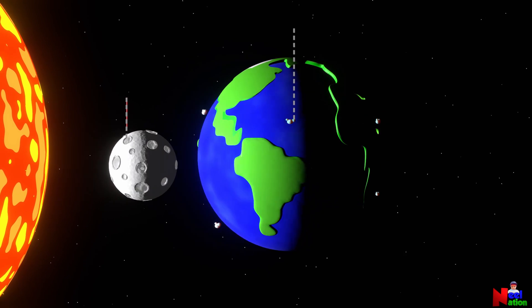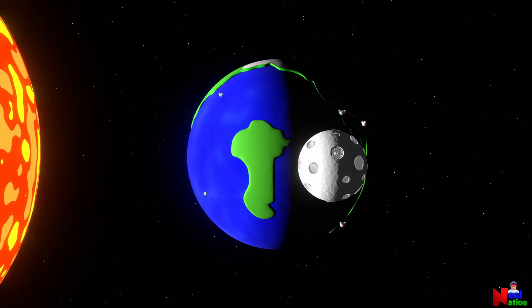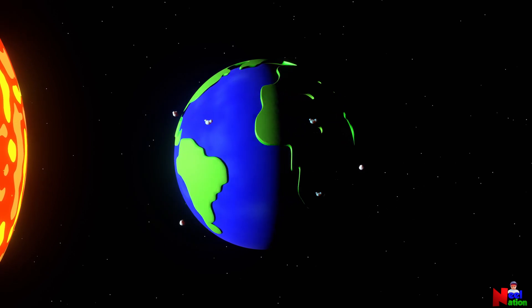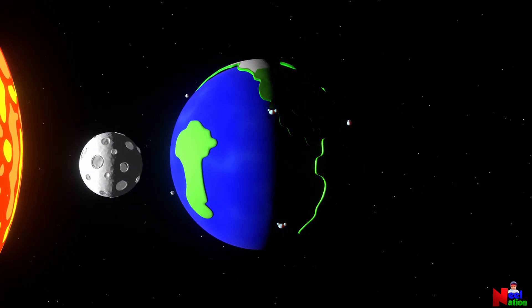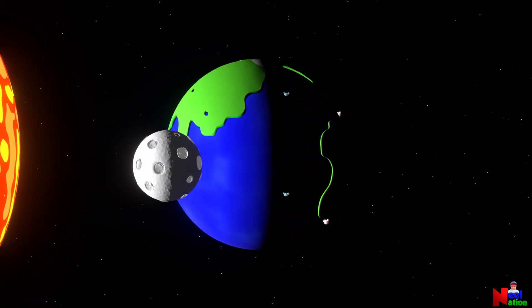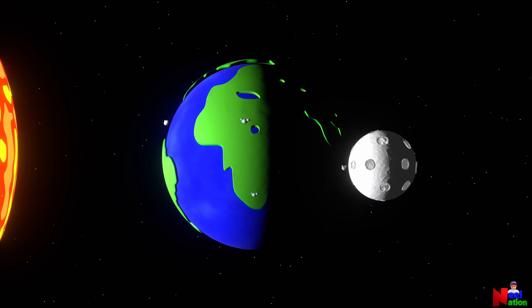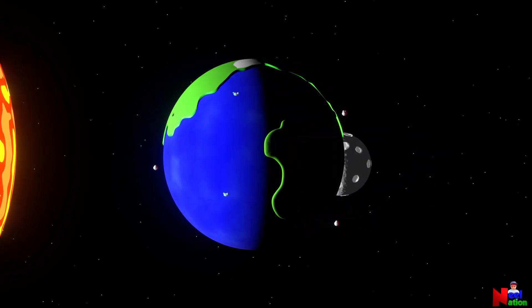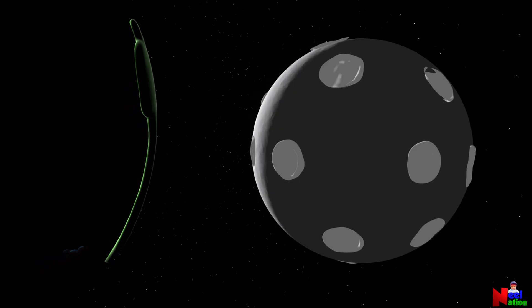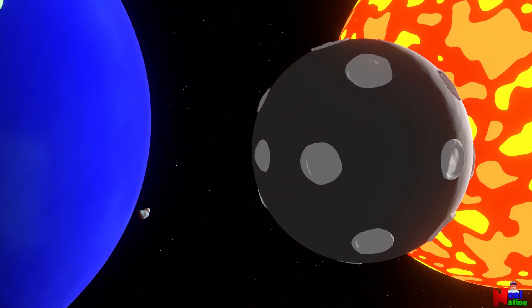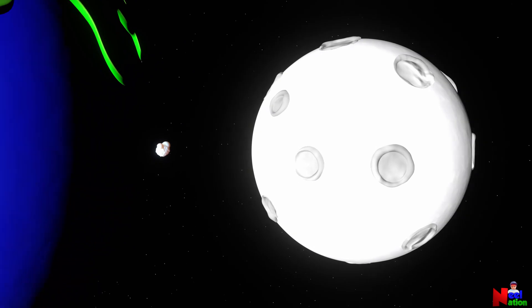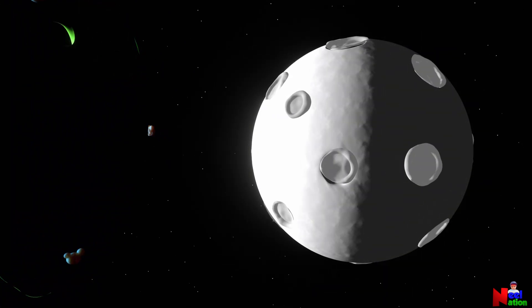The moon does not actually change shape every month. However, our view of the moon from the Earth does change. From Earth, our view of the lit up side of the moon changes every night depending on where the moon is in its path around the Earth. This is the view of the moon from the Earth. Look how the phases of the moon are changing.